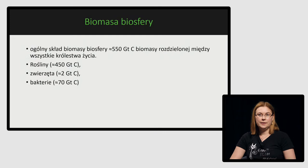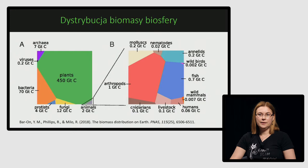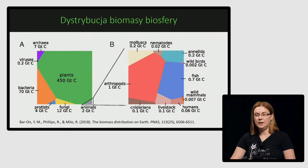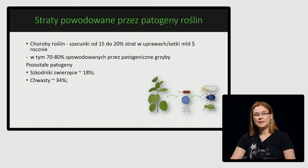Bardzo ważne, może na samym początku, jest wskazać, że rośliny to największy element biosfery. Ich biomasa, jak porównamy razem z innymi elementami biosfery, stanowi ponad 82%. Na drugim miejscu są bakterie, natomiast ludzie i zwierzęta razem wzięci stanowią mniej niż 0,5%. W związku z tym rośliny stanowią praktycznie większość tego, co mamy w biosferze, i atakowane są przez bardzo wiele różnych stresów.